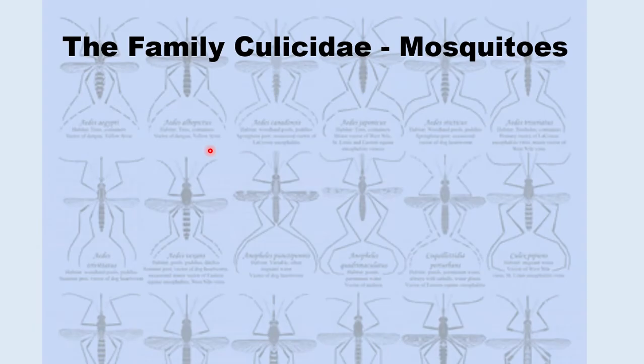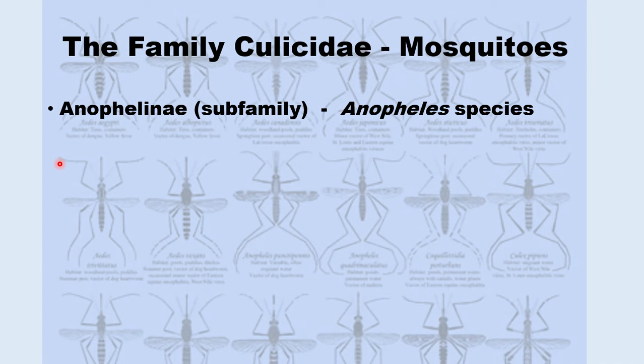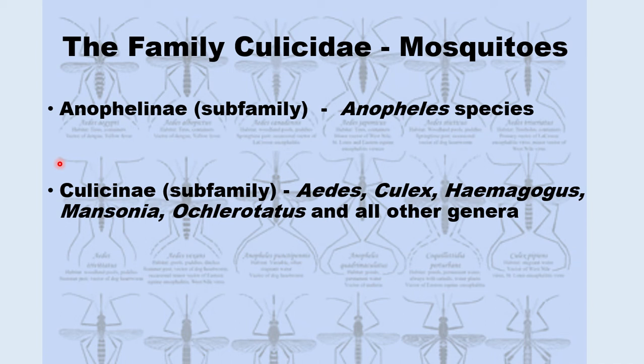The family Culicidae — the mosquitoes — you don't need to know the family names, just the order scientific names: Diptera for flies, and the common names: flies, midges, and mosquitoes. This family Culicidae is made up of two subfamilies: the Anophelinae subfamily, which includes the Anopheles genus, and the Culicinae subfamily, which includes Aedes, Culex, Mansonia, and all other genera of mosquitoes.